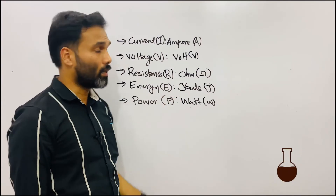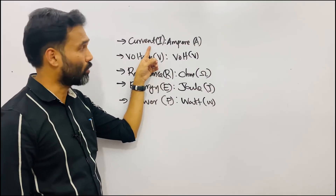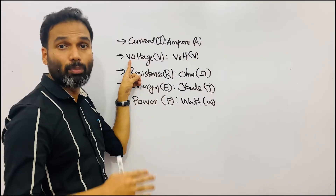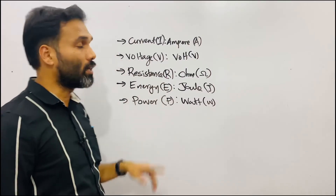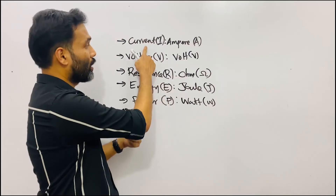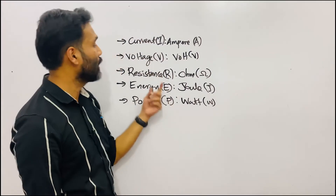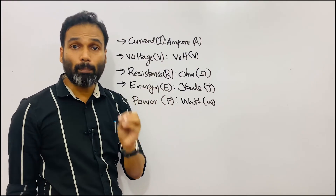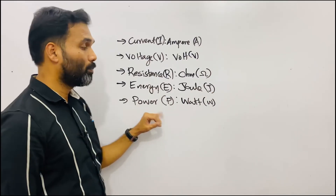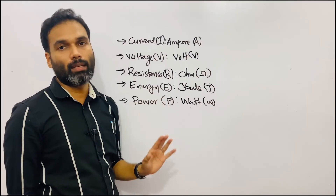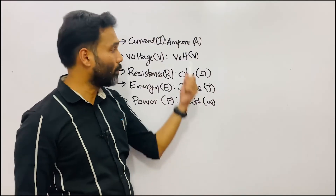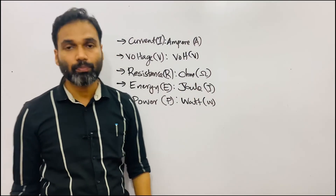These are the basic terms related to electrical. Current: flow of electrons, unit ampere. Voltage: potential difference between two points. Resistance: opposition to the flow of current, denoted as R. Energy: the capacity to do work, unit Joule, symbol J. Power: the rate at which work is being done. These are the basic terms related to electrical.